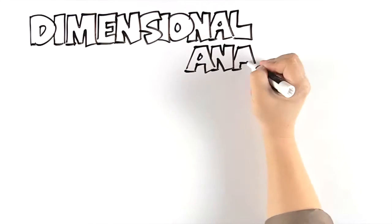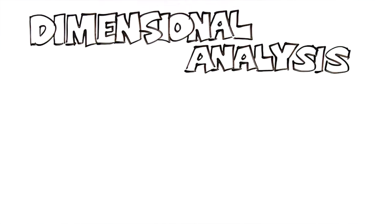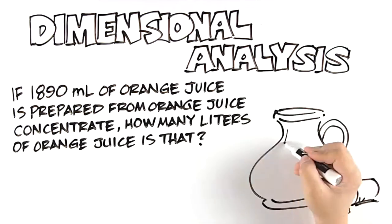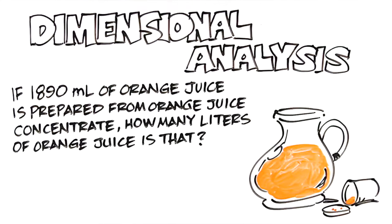In this problem, you are using what you've learned about the metric system in the chapter to solve a basic chemistry problem using dimensional analysis. The problem you are solving is this: If 1,890 milliliters of orange juice is prepared from orange juice concentrate, how many liters of orange juice is that?